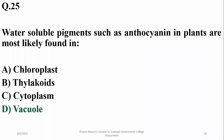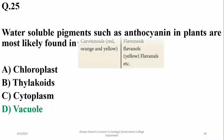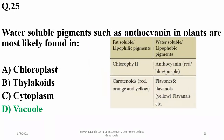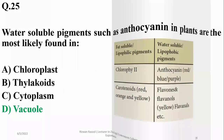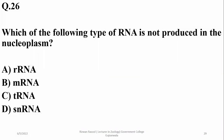Question 25: Water-soluble pigments such as anthocyanin in plants are most likely found in the vacuole. Carotenoids and chlorophyll are water-insoluble. Right option is D (vacuole).